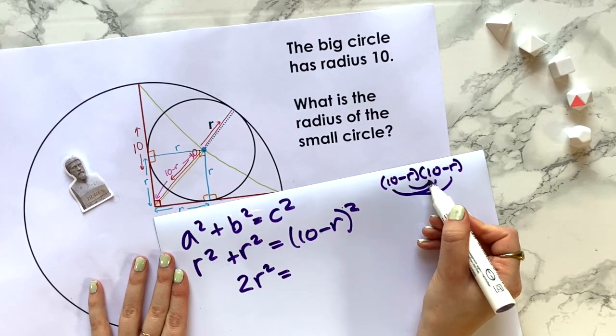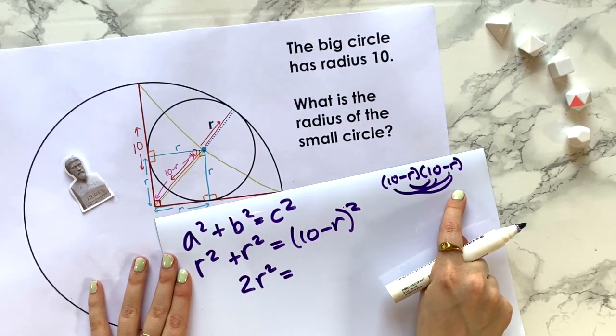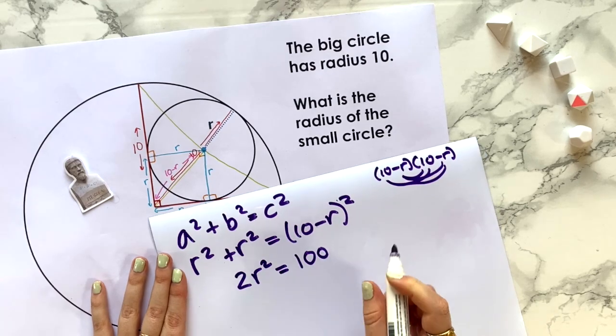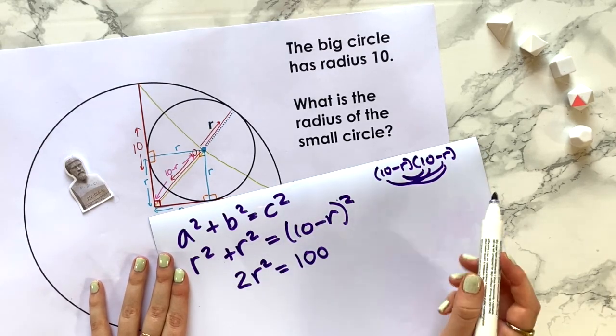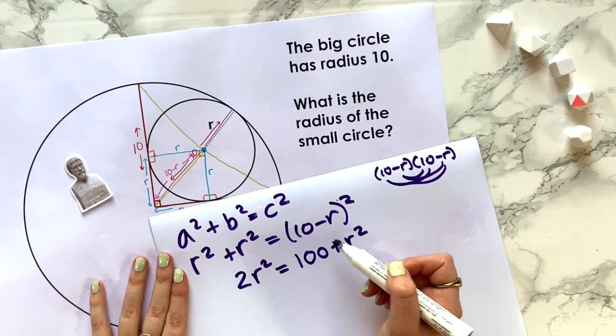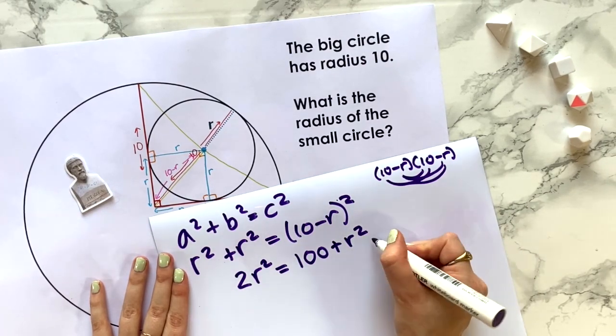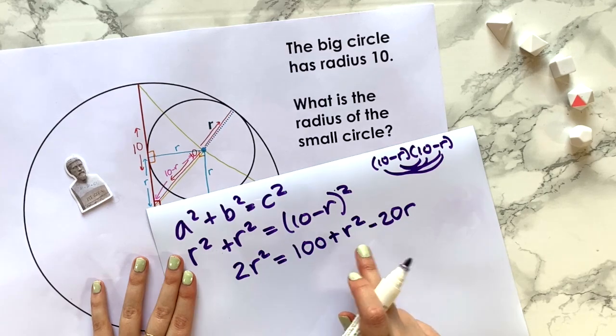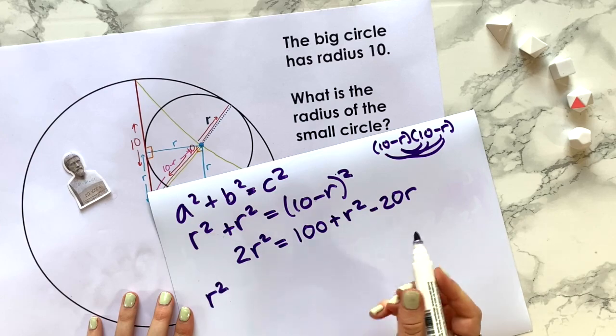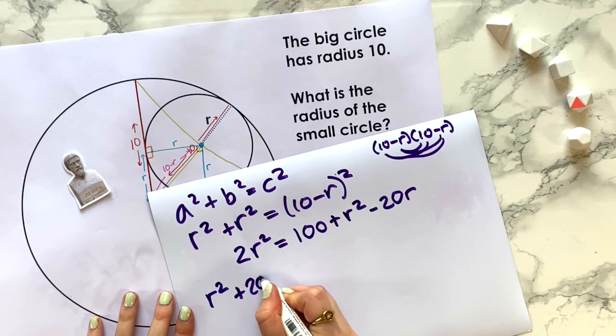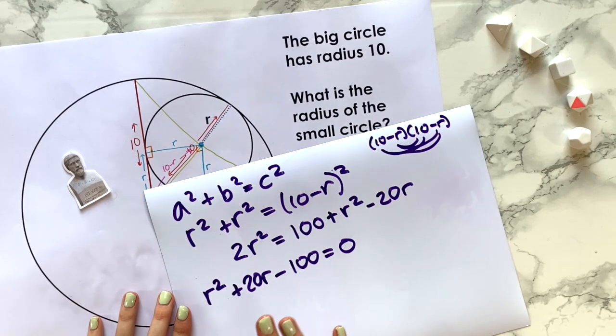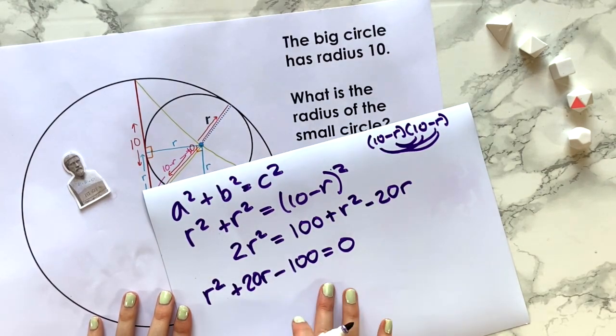Remember, this is the same as 10 - r times 10 - r. You can do the multiplication where you make sure everything is timed by everything else. We would get 10 times 10, which would be 100. We'd have the -r times -r, which would give us +r². These two times by each other is -10r; two lots of that is -20r. Let's bring everything to one side. Subtracting r² from each side, we get r² + 20r - 100 = 0.